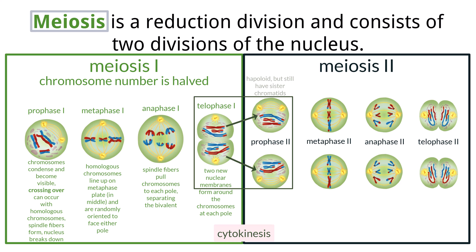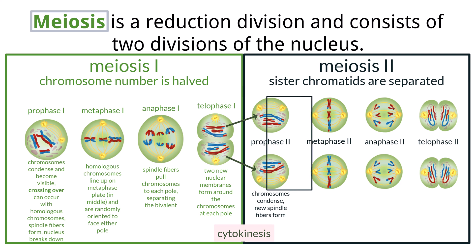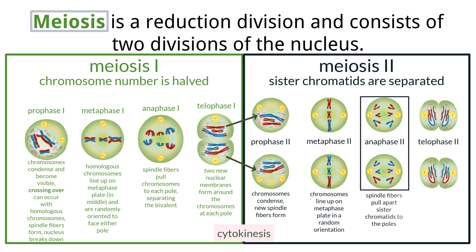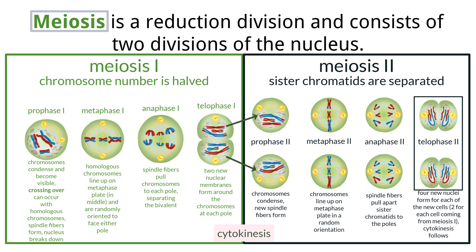It is during meiosis II that the sister chromatids will separate. In prophase II, the DNA condenses again, but there is no crossing over. New spindle fibers form. In metaphase II, the nuclear membrane is gone and the individual chromosomes line up randomly along the metaphase plate. Spindle fibers attach to the sister chromatids. The sister chromatids are pulled apart during anaphase II. Nuclear membranes form around each of the four new cells. A cell plate forms in plant cells, and in animal cells the cell membrane pinches in. Cytokinesis can now occur.